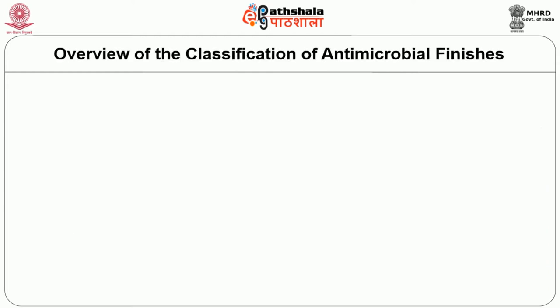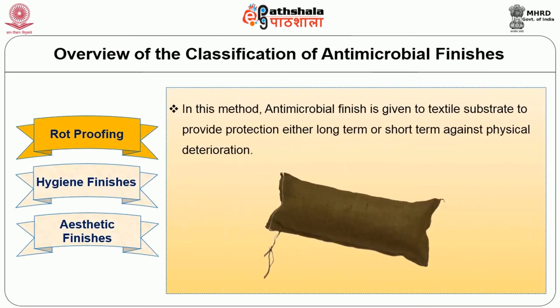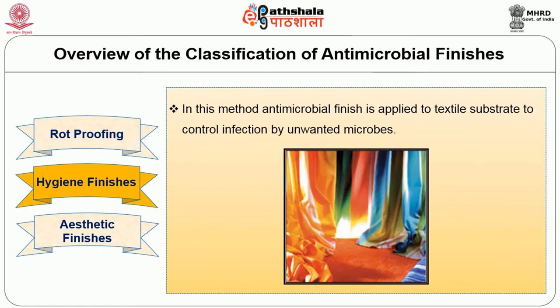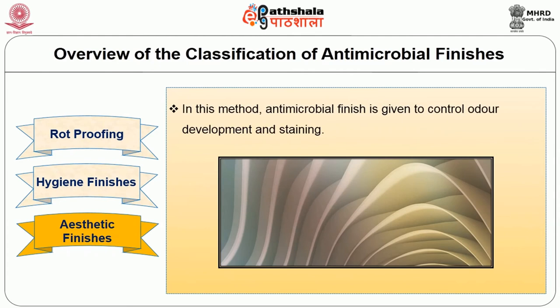Next we will have an overview of the classification of antimicrobial finishes. Antimicrobial finish is subdivided into three main groups: Rot proofing, where antimicrobial finish is given to textile substrate to provide protection either long-term or short-term against physical deterioration; Hygiene finishes, where antimicrobial finish is applied to control infection by unwanted microbes; and Aesthetic finishes, where antimicrobial finish is given to control odor development and staining.